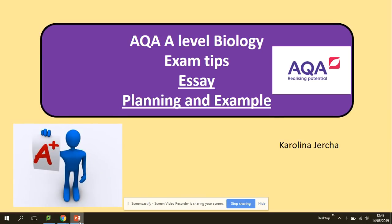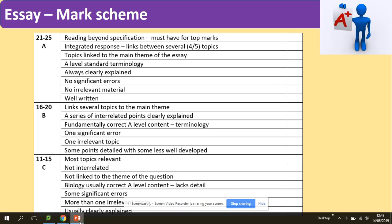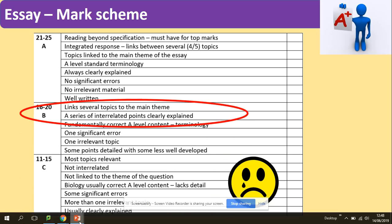Hi guys, welcome to my video on essays. We will be looking at the planning and also look at an example of how you can plan an outstanding essay. So really quickly, remember the mark schemes — if you want to be in the top of the mark scheme, you need to provide an integrated response. Topics are linked to the main essay question. You write at A-level standard terminology. You will always clearly explain what you mean. There should be no errors and the essay is well written. People achieve on average about 12 marks on an essay because they don't make links. So don't be one of them — make links and make your grade shine.